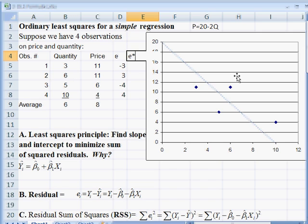E times E, E squared. Minus 3 squared is 9. 3 squared is 9. I better format these to where we can see them. There we go. 16 and 16. If we add those up squared, we get the number 50.